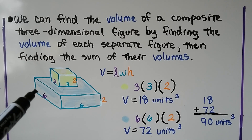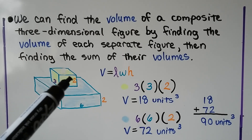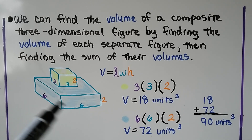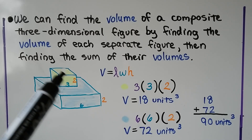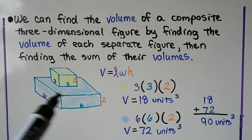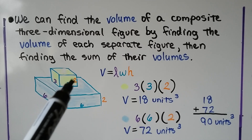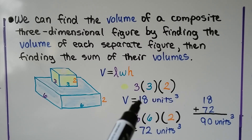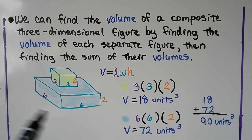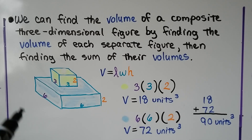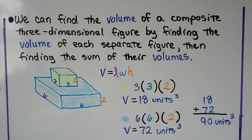Here we have a rectangular prism that measures 3 by 3 by 2 sitting on top of another rectangular prism that measures 6 by 6 by 2. We find the volume of the yellow one: 3 times 3 times 2 equals 18 units cubed. The blue one is 6 times 6 times 2 equals 72 units cubed. For the composite figure we add them together and get 90 units cubed.